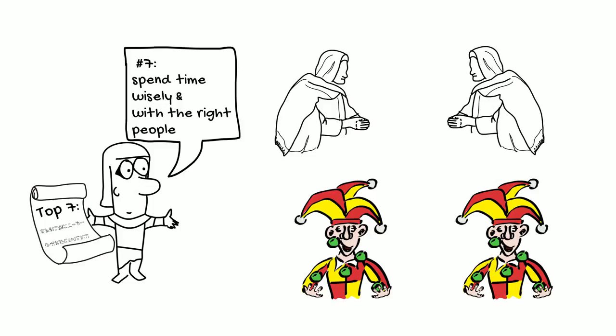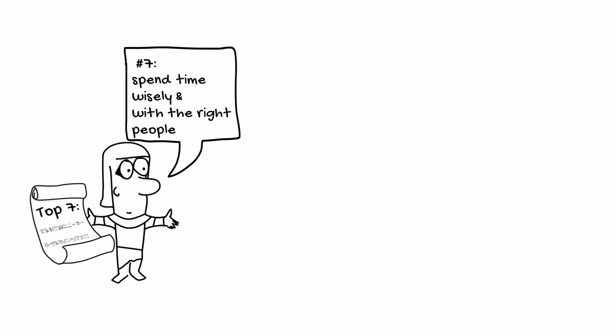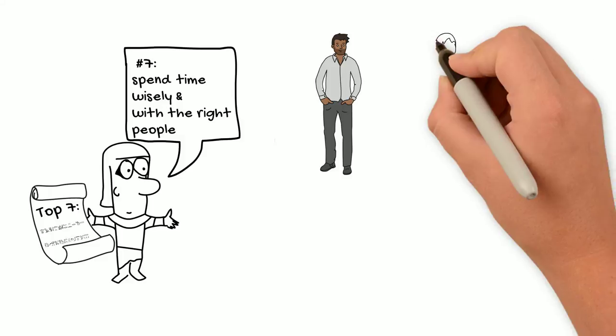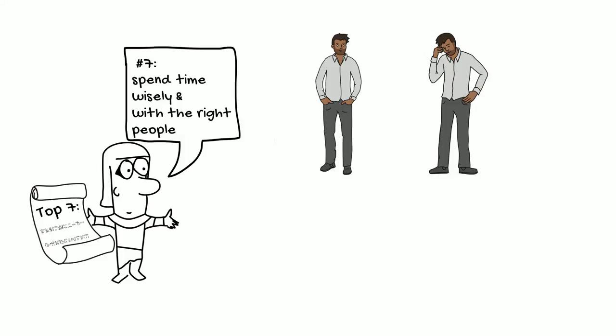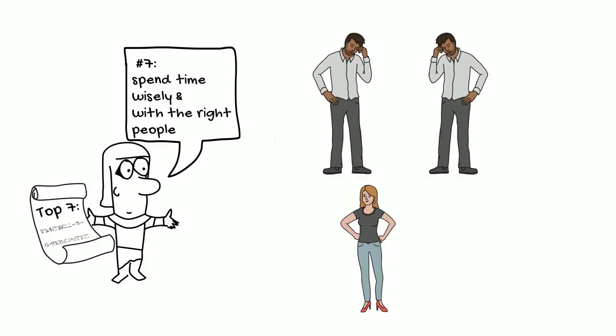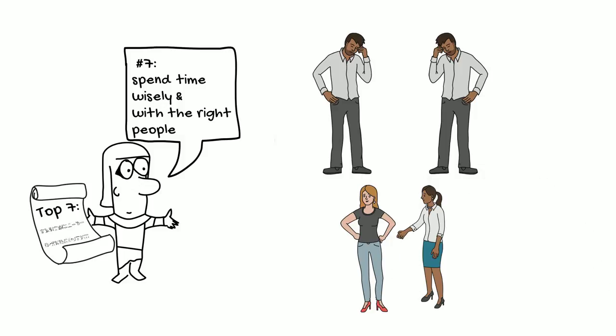This is actually pretty common advice in modern self-improvement circles because science has shown that if you hang around, for example, negative people, that you will be more negative yourself. This is because of a phenomenon called social contagion, which basically means that we tend to absorb and mirror the actions and emotions of the people around us. So whether you want to get ahead in your career or simply live a happier life, you should take a look at the people around you and perhaps reprioritize how you spend your time and who you spend it with.